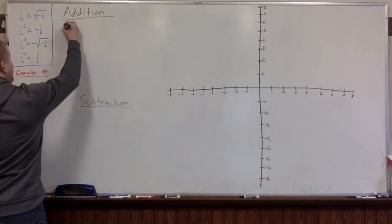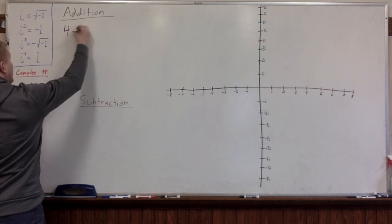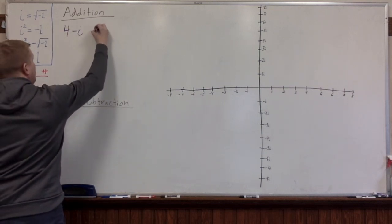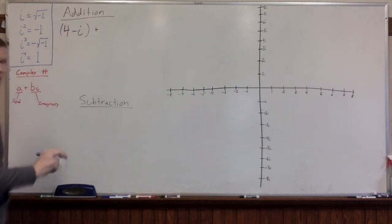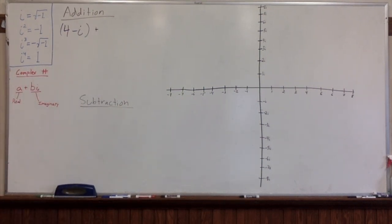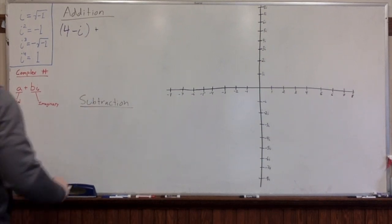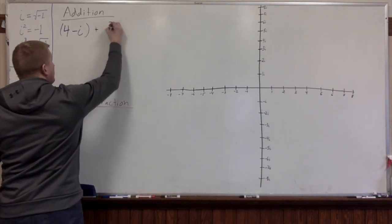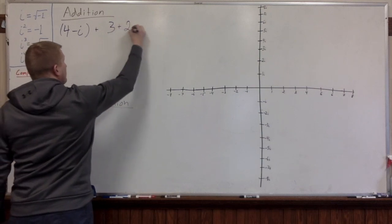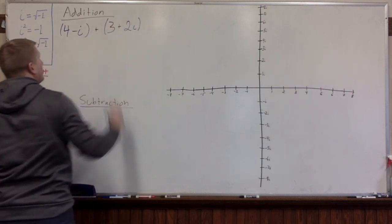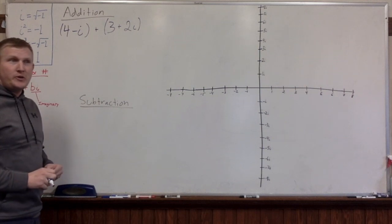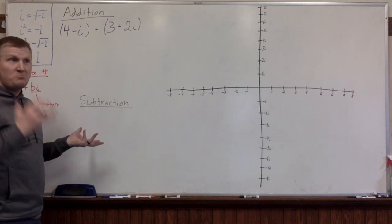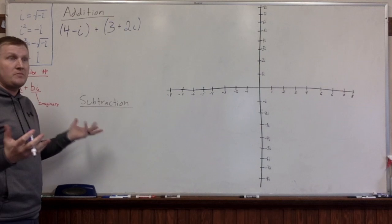Let's say our first complex number is 4 minus i — that's one complex number. And we're going to add 3 plus 2i. Addition is super simple, as we would hope. All you've got to do is add the real components, add the imaginary components, and that's it.